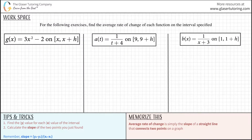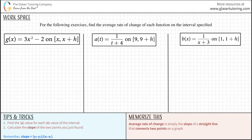For the following exercises, find the average rate of change of each function on the interval specified. Just remember what it means for average rate of change in terms of an interval. Average rate of change is simply the slope of a straight line that connects two points on a particular graph.